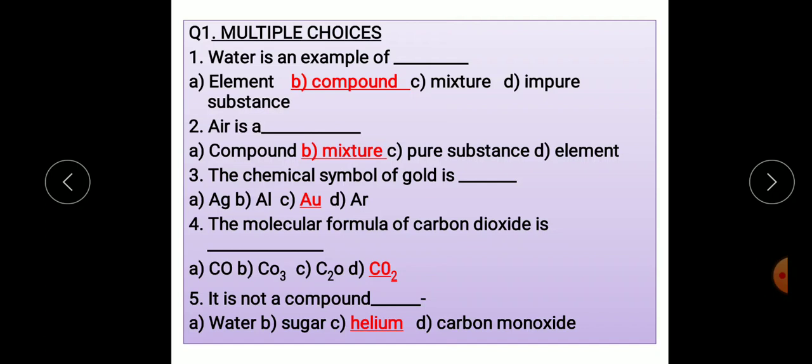Third, the chemical symbol of gold is: A. G, B. Al, C. Au, D. Ar. The correct option is option C, Au. The chemical symbol of gold is Au.